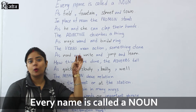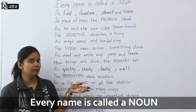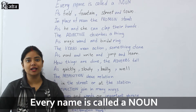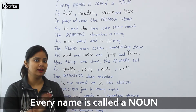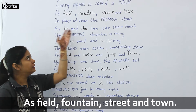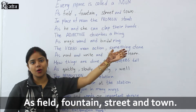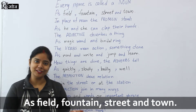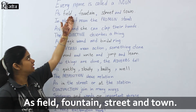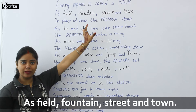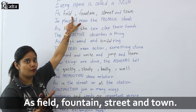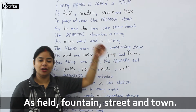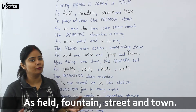Every name is called a noun — sabhi naamon ko noun kehte hain. A field, fountain, street or town. Now you can see the noun that I have written in the block. What is the noun? A field, fountain, street or town. So this is the whole poem frame.